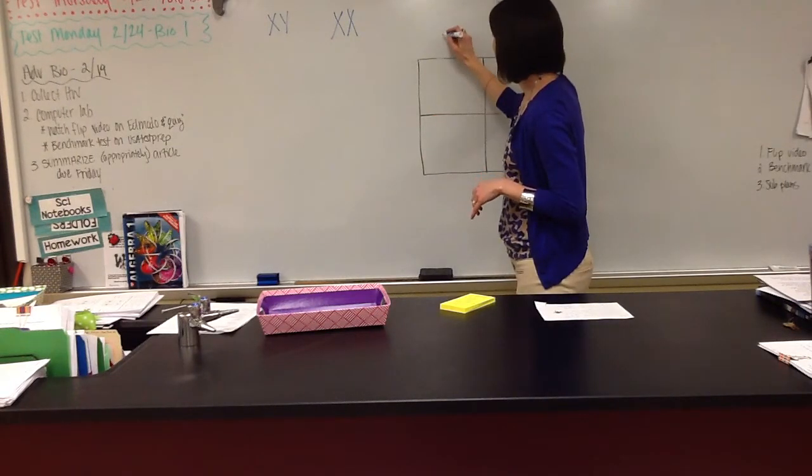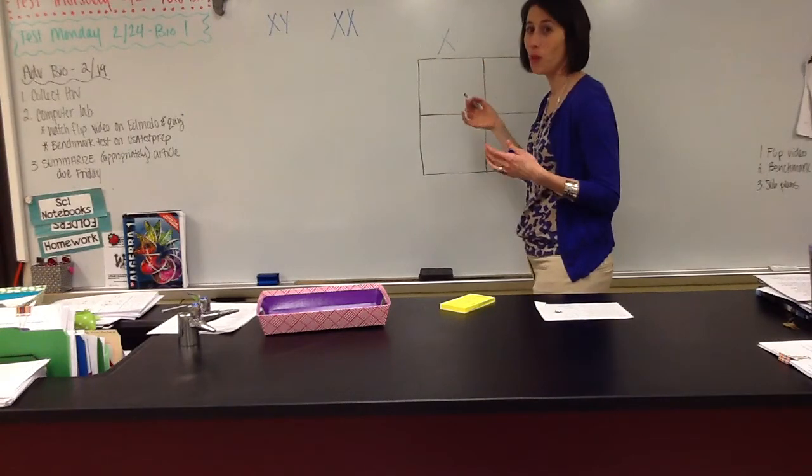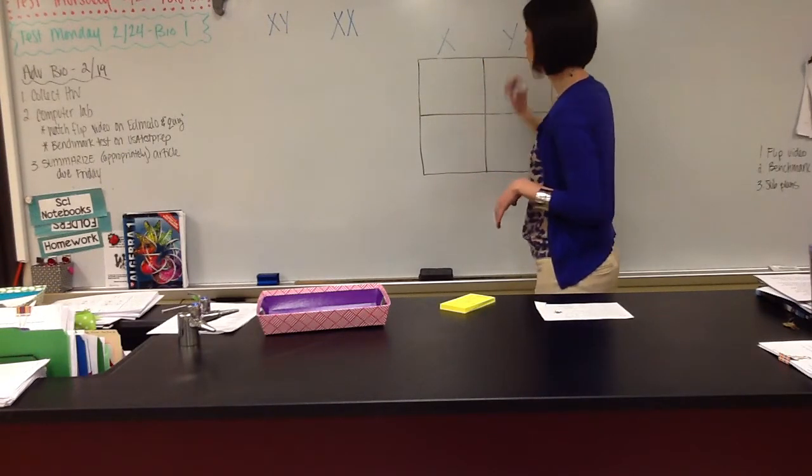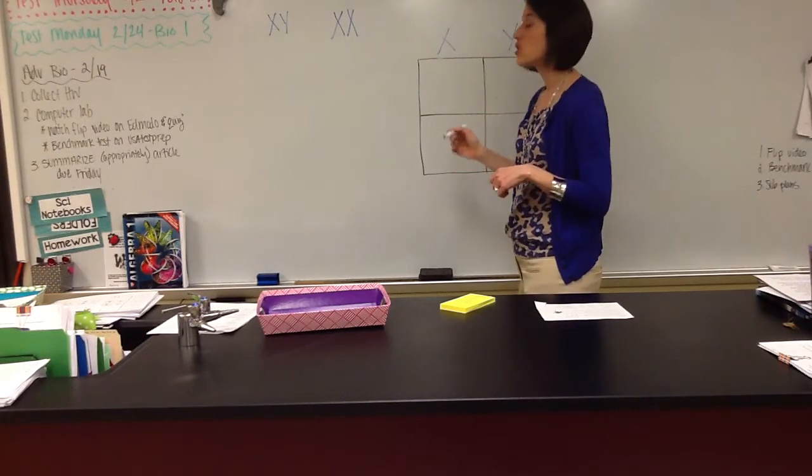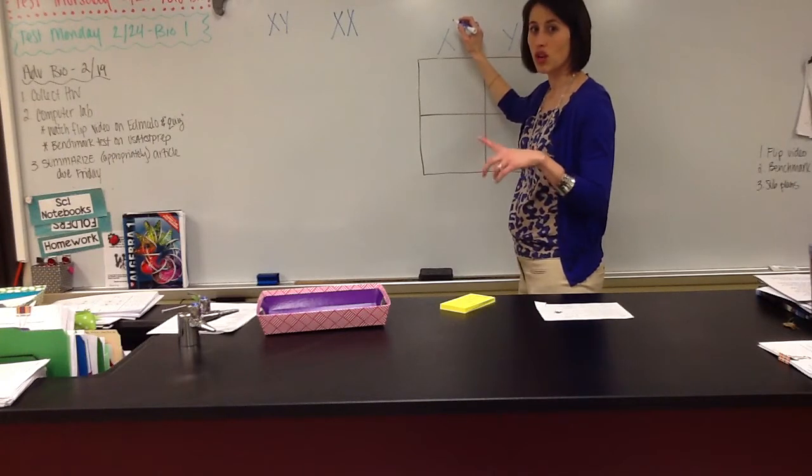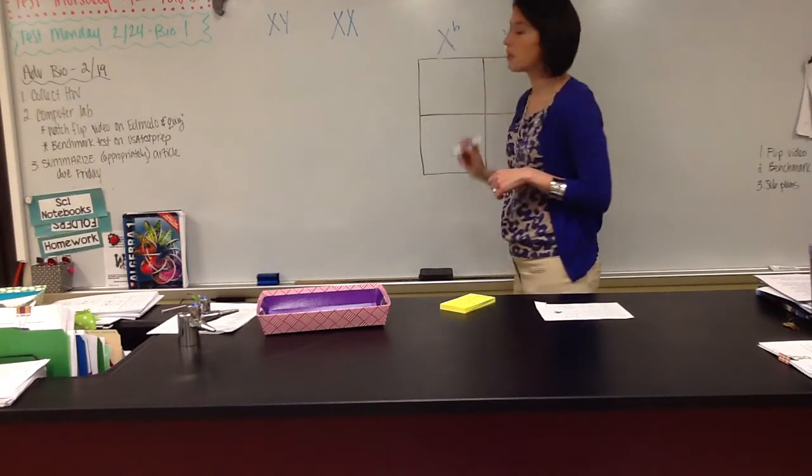So I'm going to put at the top, Tim is a boy, so we're going to do XY because he's male, and he does have the colorblind gene. Remember, it's recessive, so I'm going to use a subscript to denote the recessive trait. I'm going to use B for blindness.